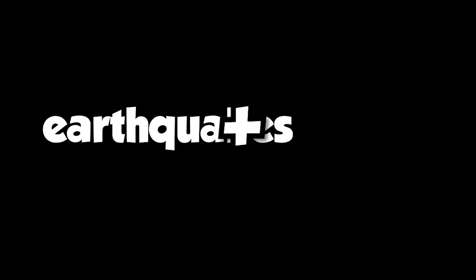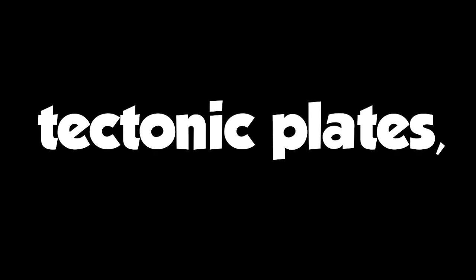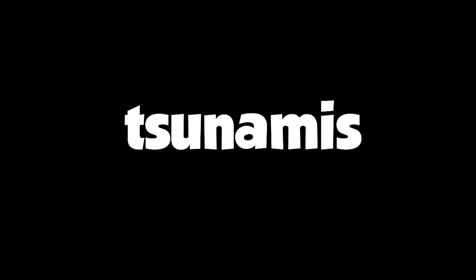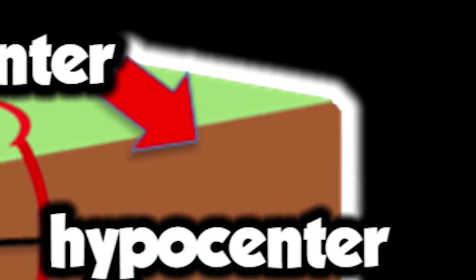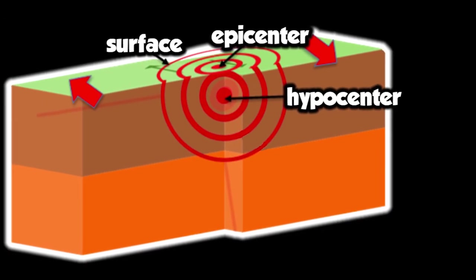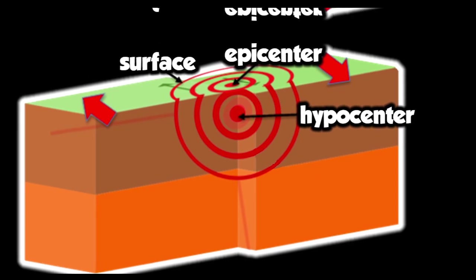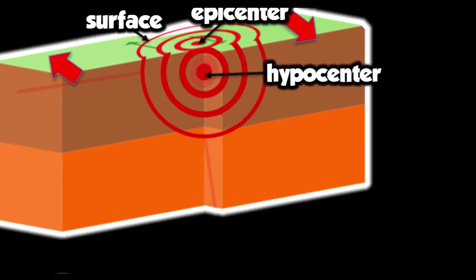Earthquakes also tie in with tsunamis because they cause them. Remember what I said earlier about tectonic plates, dummy? This is how earthquakes cause tsunamis: when the plates move, the water moves. When there's an earthquake, there's an epicenter and a hypocenter. The hypocenter is the center of the activity for the earthquake. The epicenter is directly above the hypocenter on the surface.